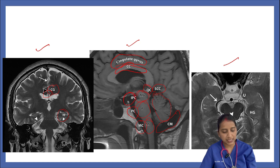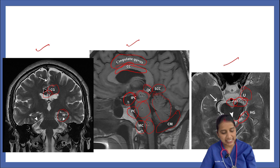In this axial image, we can identify the uncus, crural cistern, interpeduncular cistern, quadrigeminal cistern, perimesencephalic cistern, and hippocampal gyrus — structures essential for identifying brain herniation on imaging.